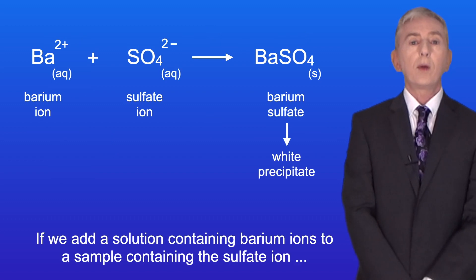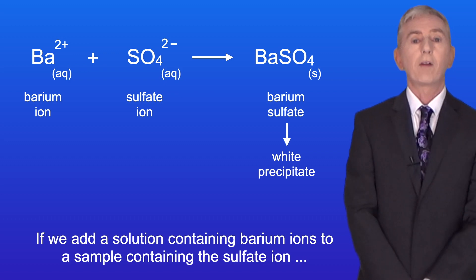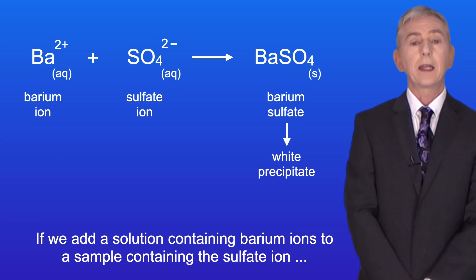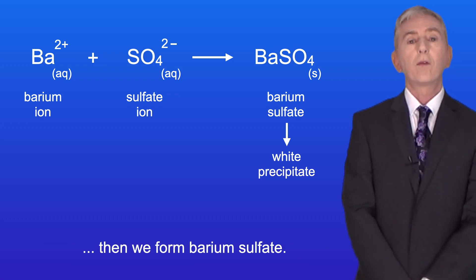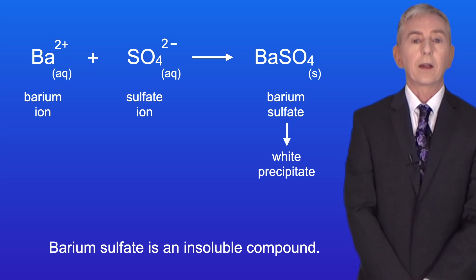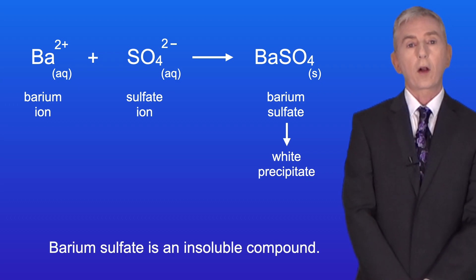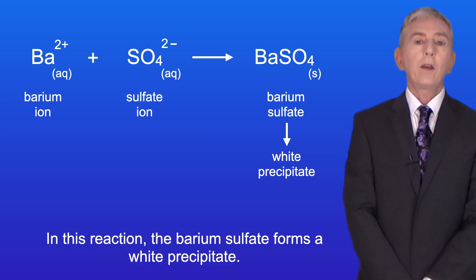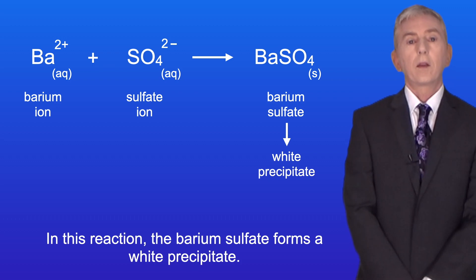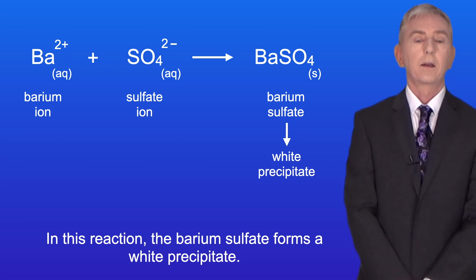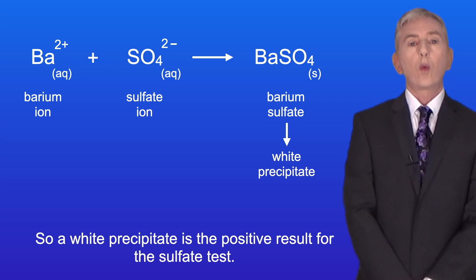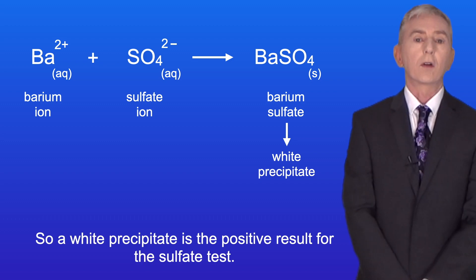If we add a solution containing barium ions to a sample containing the sulfate ion, then we form barium sulfate. Barium sulfate is an insoluble compound. In this reaction, the barium sulfate forms a white precipitate. So a white precipitate is the positive result for the sulfate test.